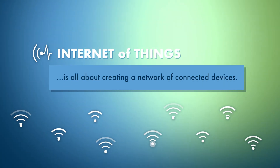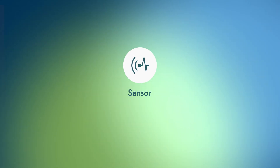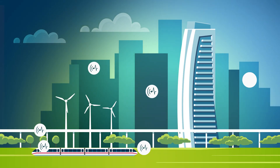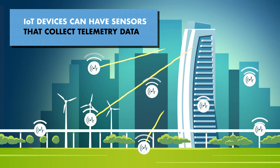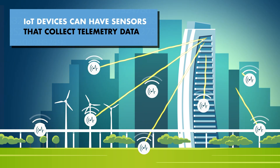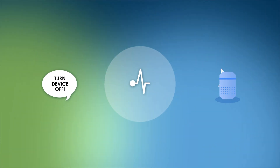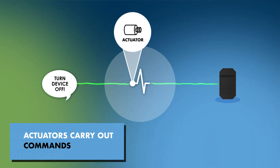These devices can perform two primary functions. They can have sensors to collect data from a physical environment — this type of data is called telemetry data. They can also receive commands that tell them to interact with a physical object. To do this, they use things called actuators.